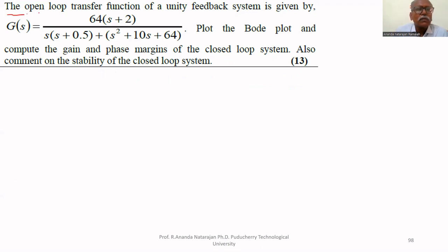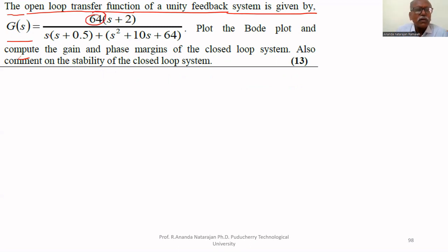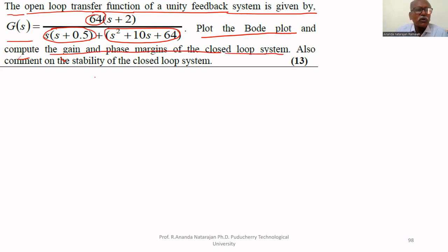The open loop transfer function of a unity feedback system is given by G(s) = 64(s+2) / [s(s + 0.5)(s² + 10s + 64)]. Plot the Bode plot and compute the gain and phase margins of the closed loop system. Also comment on the stability of the closed loop system.